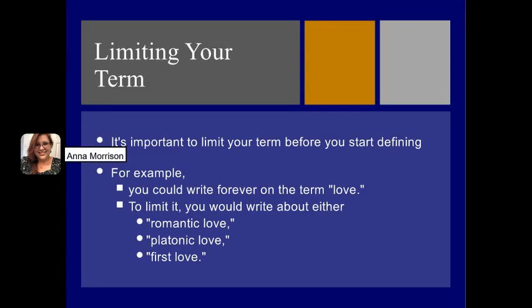It's important to limit your term before you start defining it. For example, you could write forever on the term love. To limit it, you would write about romantic love, platonic love, first love, puppy love, or universal love. The list goes on — you would need to pick one.